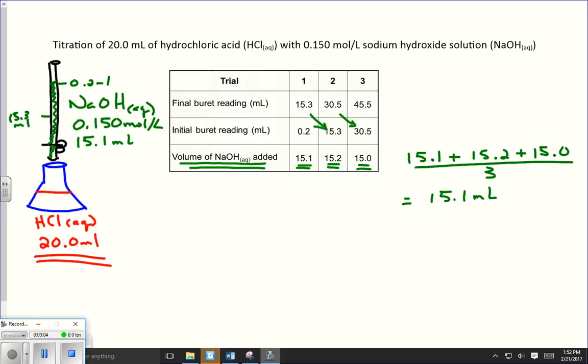So that's the information we need in order to do our calculation. Next thing we're going to need to do our calculation is the balanced chemical equation. So we are adding hydrochloric acid, which is HCl(aq). Adding to that is the sodium hydroxide, the titrant. So we've got the sample, and we're adding the titrant to the sample.